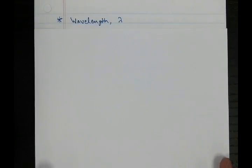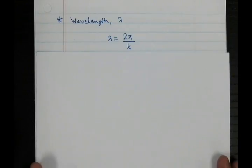Now that we know the frequency of the wave, let's find out the wavelength of the wave. The wavelength of the wave is given by λ. And λ is equal to 2π upon k. k is the angular wave number.